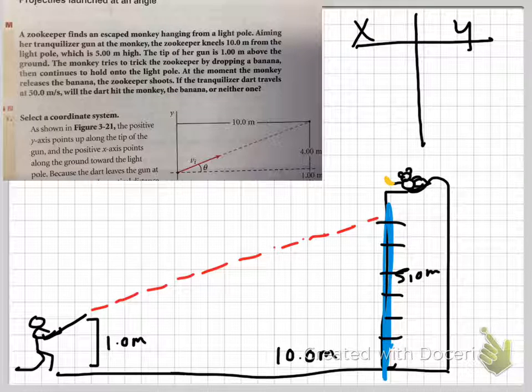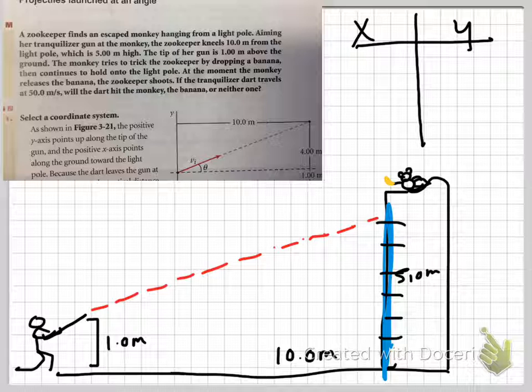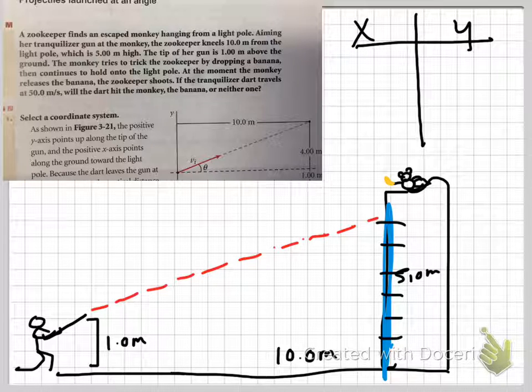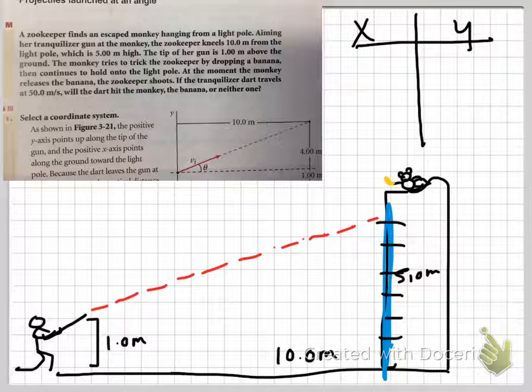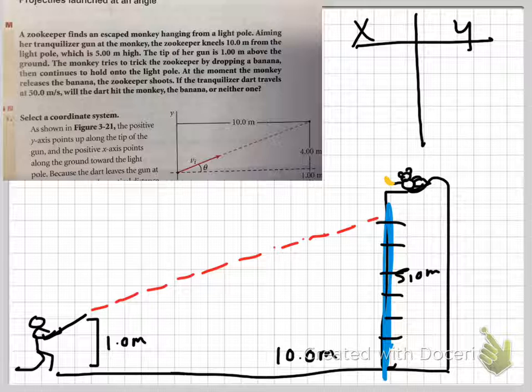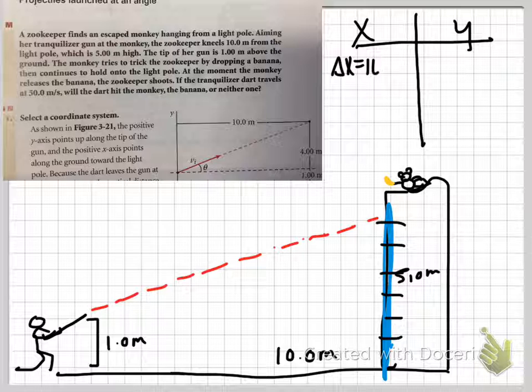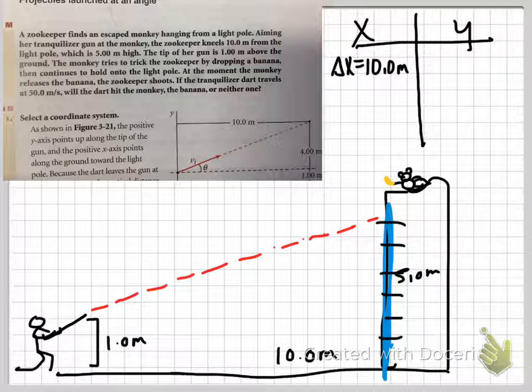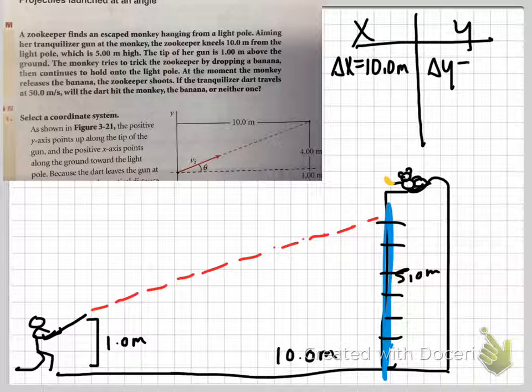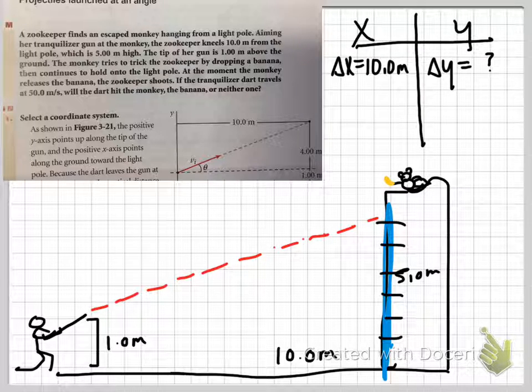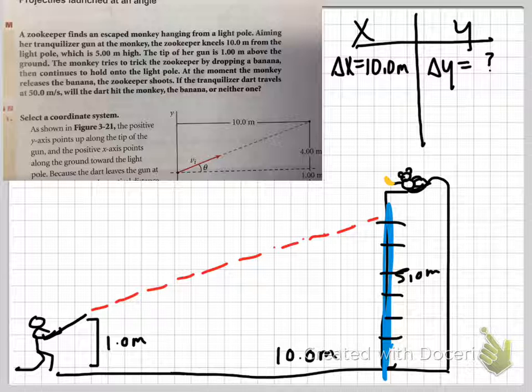What we really want to know is when it gets to delta X equals 10 meters, where is it on the Y axis? This is one of the things we come back to again and again. It was like a light bulb moment when I realized that for every position on the X axis, there's a corresponding position on the Y axis. That's when I say we're tying the axes together with time.